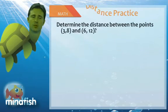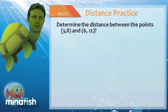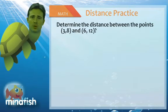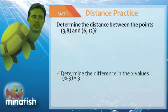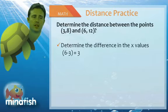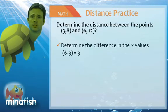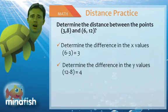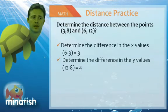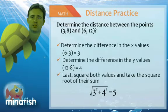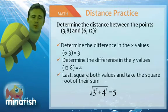So let's try a distance practice problem. So determine the distance between the points 3 comma 8 and 6 comma 12. So to do this, we first need to get the change in X and the change in Y. So the change in X would be 3 minus 6, or 6 minus 3, which is 3. The change in Y would be 12 minus 8, which would be 4. Solving for the distance, we simply square these two values and take the square root, which will yield 5. The square root of 3 squared plus 4 squared is indeed 5.